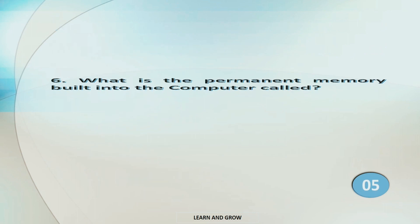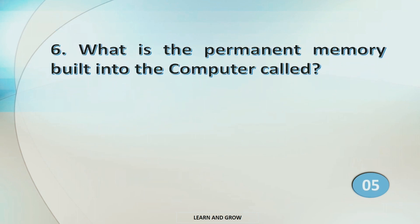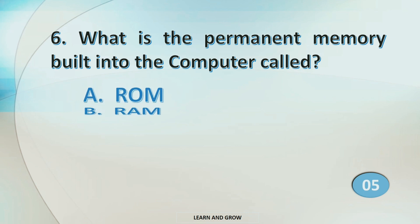What is the permanent memory built into the computer called? Option A: ROM, B: RAM, C: CPU, or option D: Floppy.